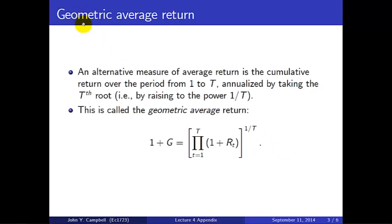So what's the geometric average return? Well, that is the cumulative return over the whole sample period from period 1 to period capital T, then annualized by taking the Tth root or by raising to the power 1 over T. So the geometric average return is defined like this: 1 plus G is the product of all the gross returns period by period, the product of capital T of those things, and then we annualize by raising to the power 1 over T.